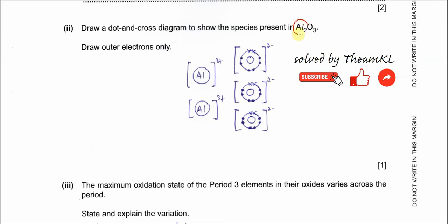There are two aluminum atoms, so six electrons are donated out in total. For aluminum in the dot-cross diagram, you don't need to show any valence electrons, because the valence electrons of aluminum have been donated to the oxygen to form the oxide ion. You just put the aluminum with its 3+ charge and no valence electrons.